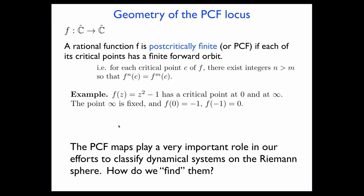From many points of view, maybe most fundamentally in our efforts to classify all possible dynamical systems, I wanted to think about where PCF maps are, how do we find them, how many are there, and what is their geometric configuration in the space of all maps. For example, if you look at the quadratic polynomial z² minus 1: it has two critical points, one at zero, one at infinity. The critical point at infinity is fixed, and zero is in a cycle of period two.